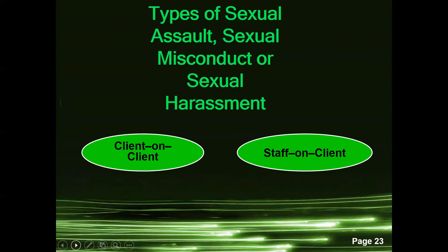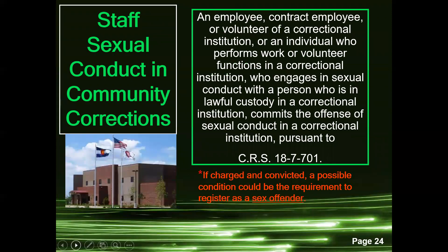There are two types of sexual assault, sexual misconduct, or sexual harassment: client on client, or staff on client. An employee, contract employee, or volunteer of a correctional institution who engages in sexual conduct with a person in lawful custody commits the offense of sexual conduct in a correctional institution pursuant to CRS 18-7-701. Staff sexual conduct in community corrections is not only a federal violation of PREA standards but is also a state statute — if charged and convicted in Colorado, a possible condition could be the requirement to register as a sex offender and face criminal charges.